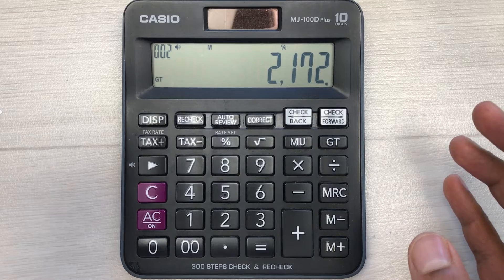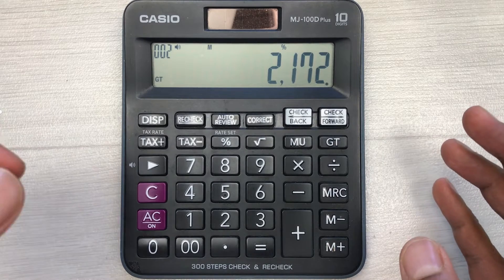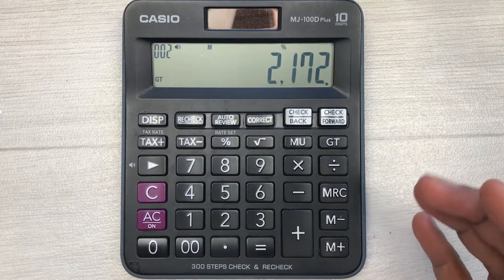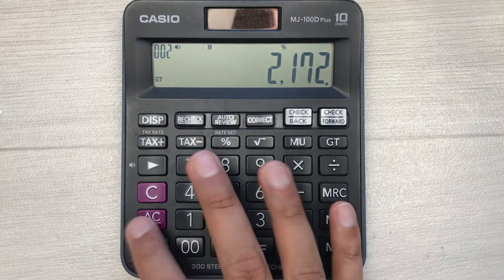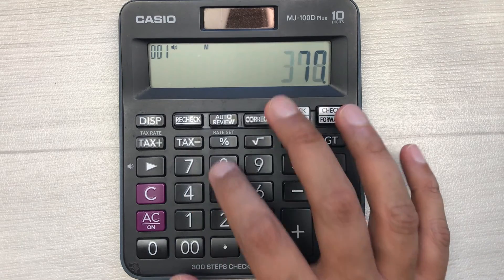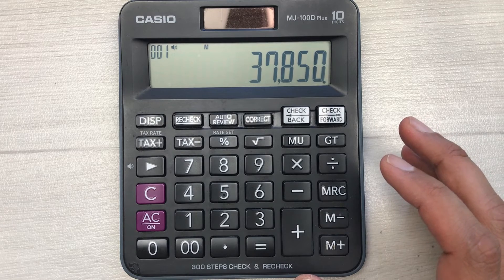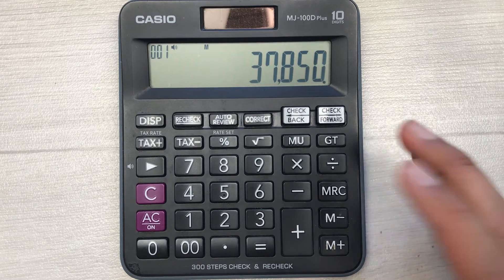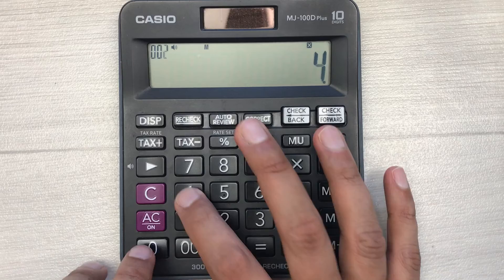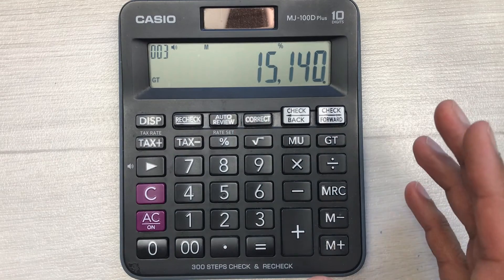Let's move to another example. Let's say you have an item and the price of that item is 37,850 and you want 60% discount. So multiply it with 40 and then press this percentage button. So here is the final answer. After 60% discount you have to pay 15,140.